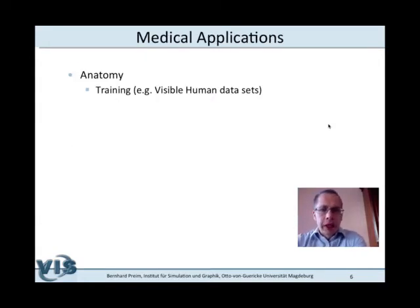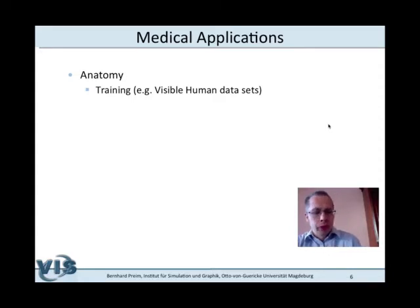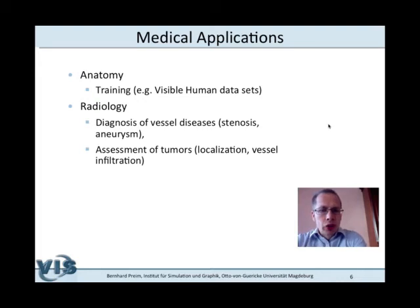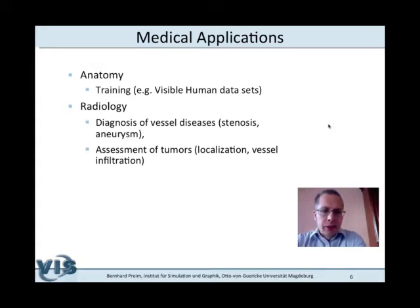What are essential medical applications? Anatomy of course — the family of visible human datasets with such high spatial resolution is used quite often for this purpose. In radiology, 3D visualization techniques and volume rendering techniques are often used for the diagnosis of vascular diseases. Vessels have complex and elongated shapes, and to fully assess them based only on cross-sectional images is not ideal. Also for the assessment of tumors, volume rendering may be used to better understand infiltrations of possible surrounding structures.